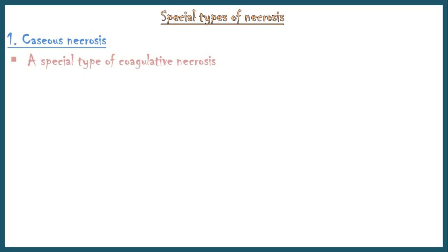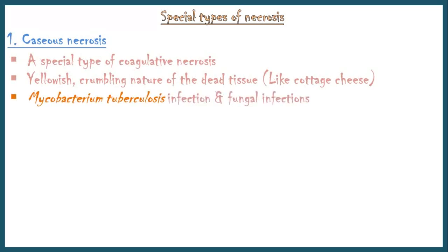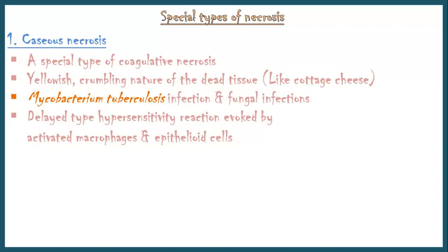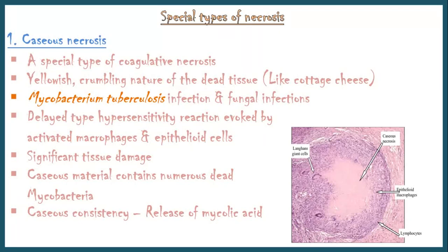Now let's come to the special types of necrosis. The first one is caseous necrosis. It is a special type of coagulative necrosis characterized by a yellowish crumbling nature of necrotic tissue, similar to the consistency of cottage cheese. It typically occurs in infection with Mycobacterium tuberculosis, and occasionally in fungal infections. Tissue necrosis is due to a delayed-type hypersensitivity reaction evoked by activated macrophages and epithelioid cells. During mycobacterial killing, there is significant tissue damage. Caseous material contains numerous dead mycobacteria, and the caseous consistency is thought to be due to the release of mycolic acid from damaged cell walls of mycobacteria. Here is an image showing the microscopic appearance of caseous necrosis.